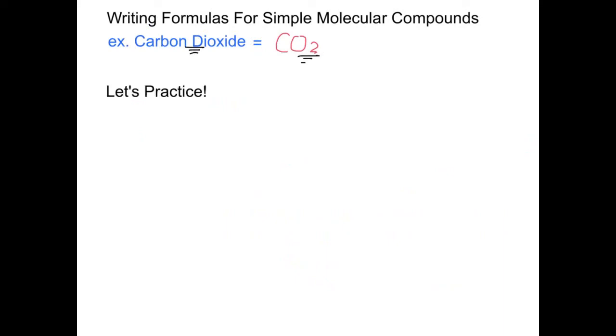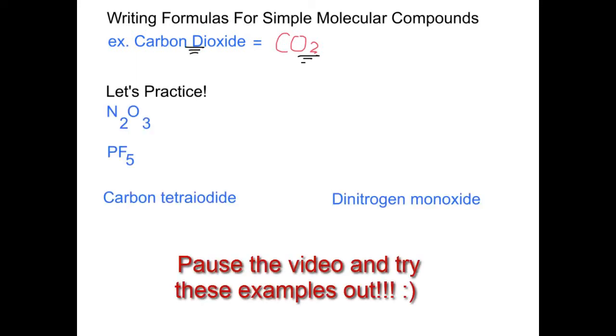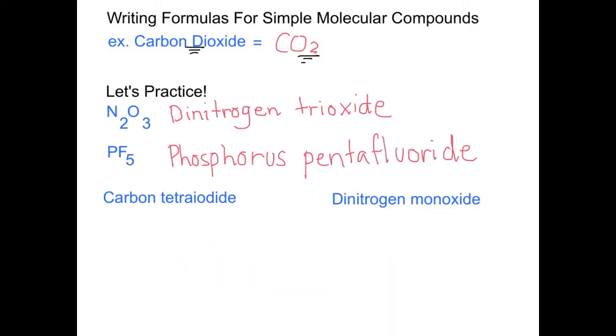Now let's practice. Here are a few examples you could try. Here are the answers to see if you got it right. Carbon tetraiodide would be written as CI4, and dinitrogen monoxide would be written as N2O.